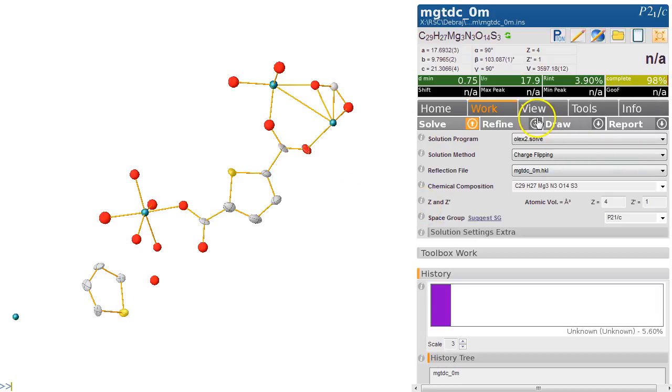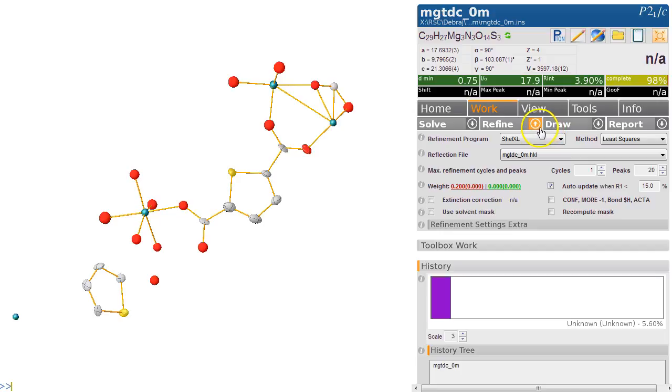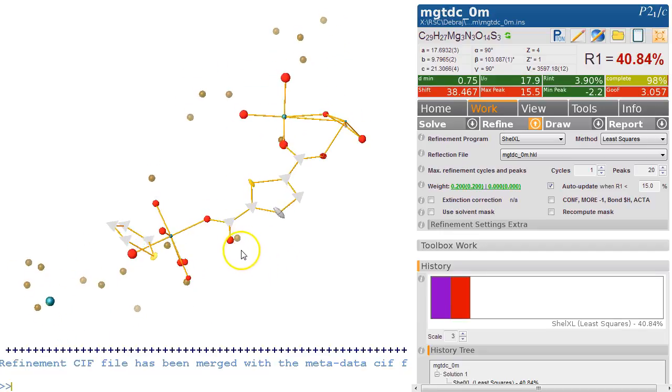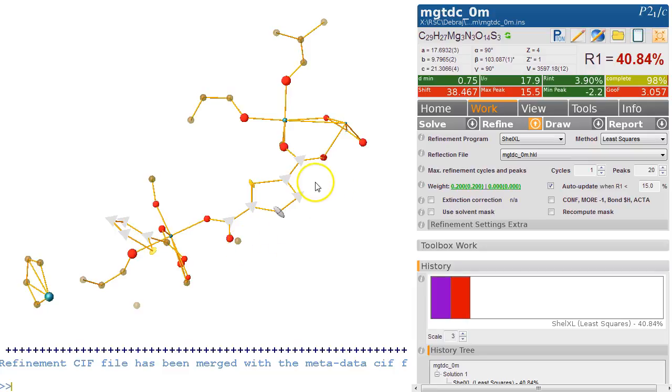First of all, let's refine it and see where we get to. I'm going to choose ShelXL to refine this. What we see is a whole lot of NPD non-positive definite atoms and also a lot of missing peaks.